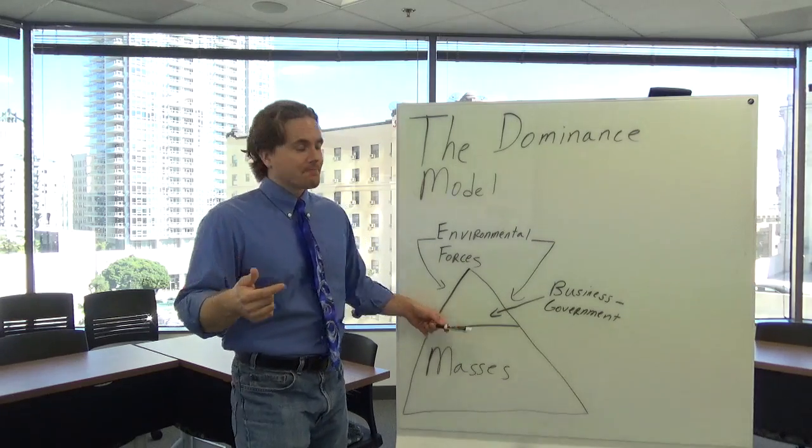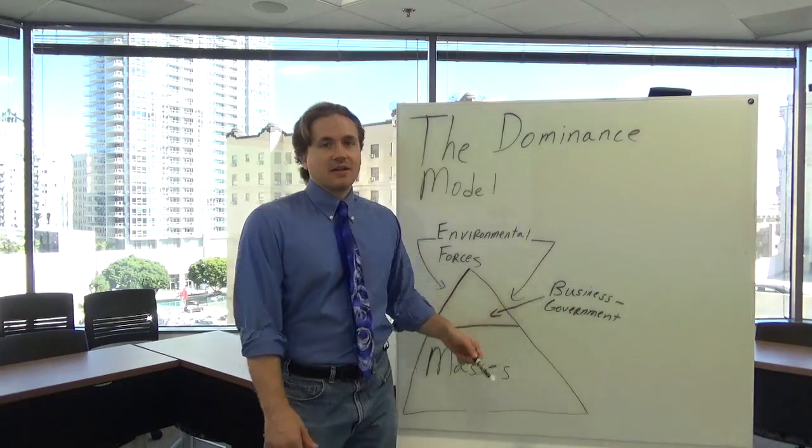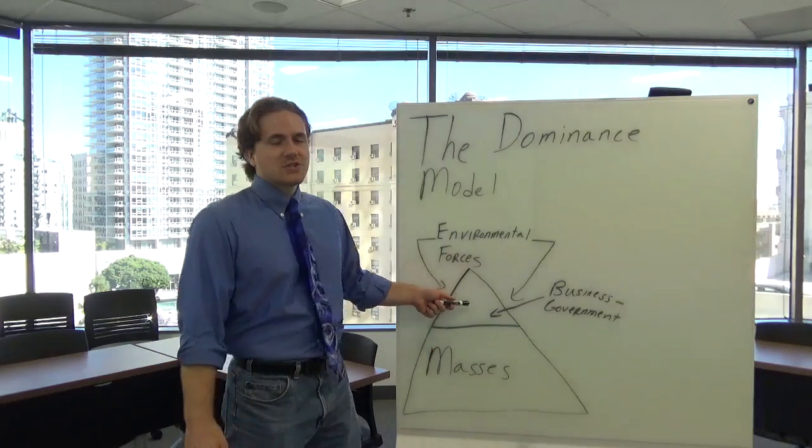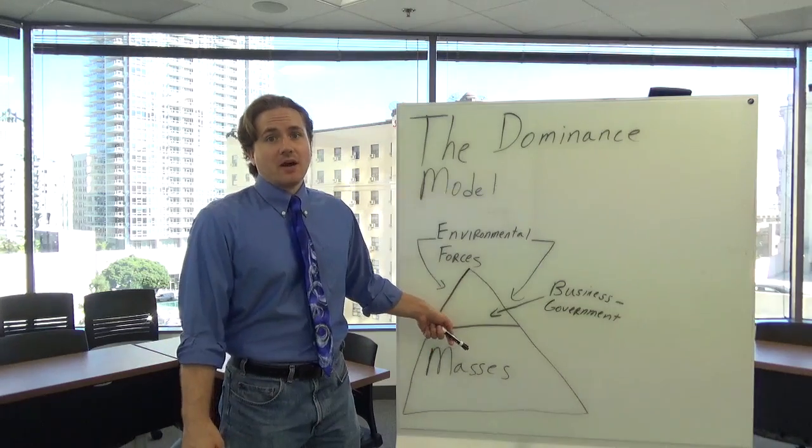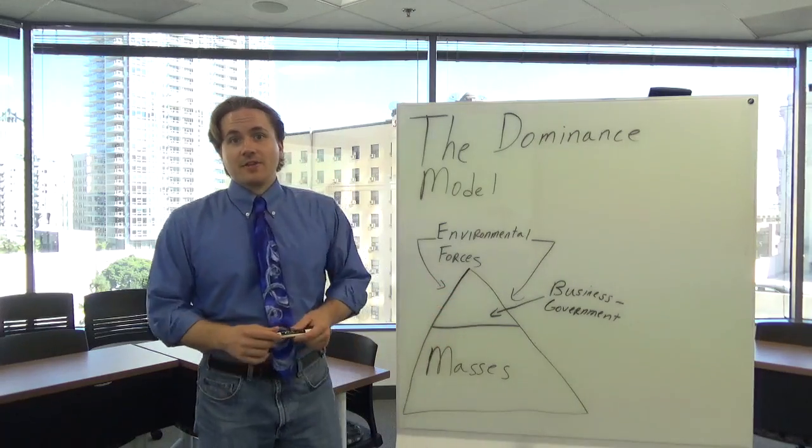However, once Hurricane Katrina hit, these business and governmental elites left the city of New Orleans, and other people from the masses rose up to dominate others. So you had gangs and marauders, basically with a reign of terror in the city of New Orleans.